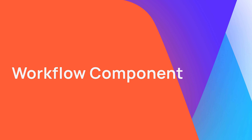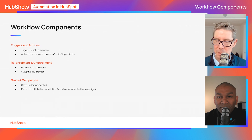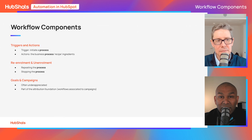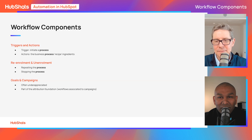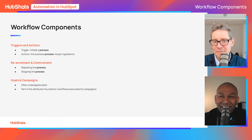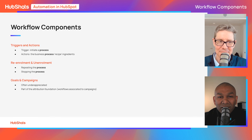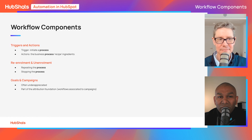Let's break down the components of workflows. We split these into three key areas: triggers and actions, re-enrollment and un-enrollment, and goals and campaigns. A trigger initiates a process; the action is the business process or recipe that executes. Re-enrollment is about repeating the process; un-enrollment is about stopping it. Goals and campaigns are often underappreciated — this is a key part of attribution, where you associate workflows with campaigns. Understanding why and how you use goals in a campaign really underpins moving ahead.